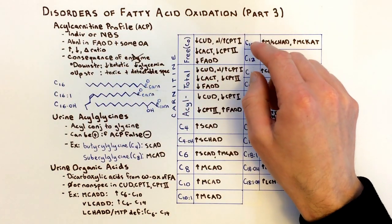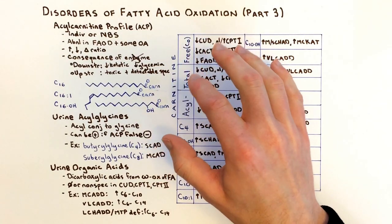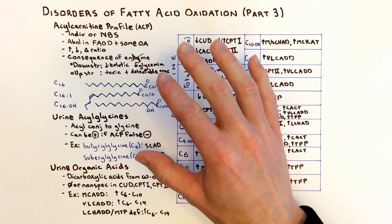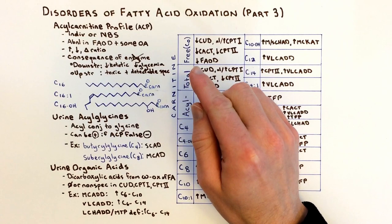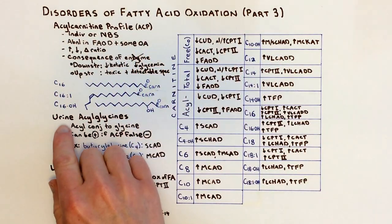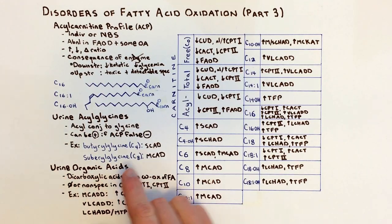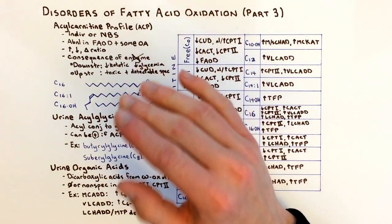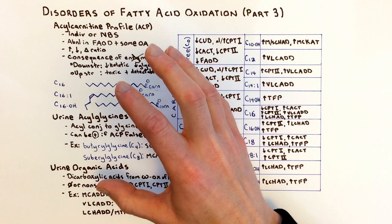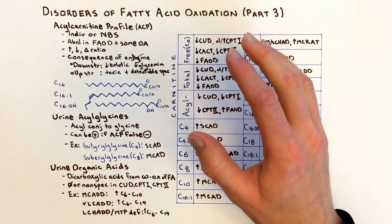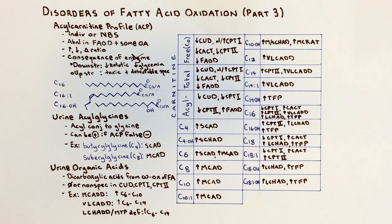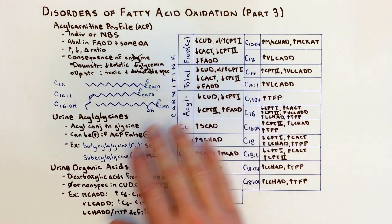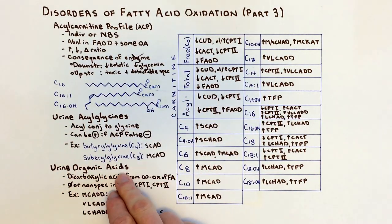This is part three in a three-video series. In the first video, we looked at the pathway of fatty acid oxidation. In the second video, we looked at the clinical features of the disorders of fatty acid oxidation. In this lecture three, we'll take a look at the acylcarnitine profile, as well as urine acylglycines and urine organic acids — three tests used to distinguish between the disorders of fatty acid oxidation and to make a diagnosis.